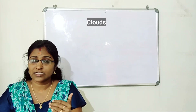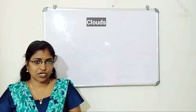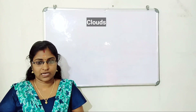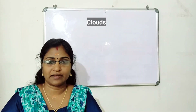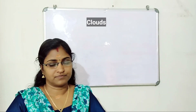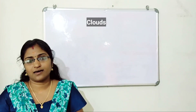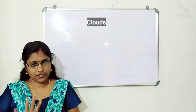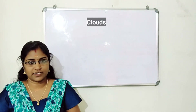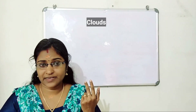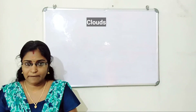Form means shape. Based on form, clouds are classified into four types: cirrus, stratus, cumulus, and nimbus.